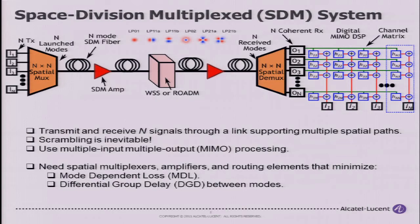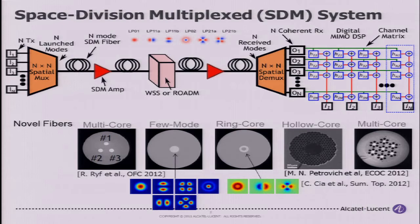There are many different fibers on which you can do space division multiplexing, including multi-core, few-mode, ring core, more exotic types such as hollow core fiber, and even multi-core fiber with some air gaps in it.